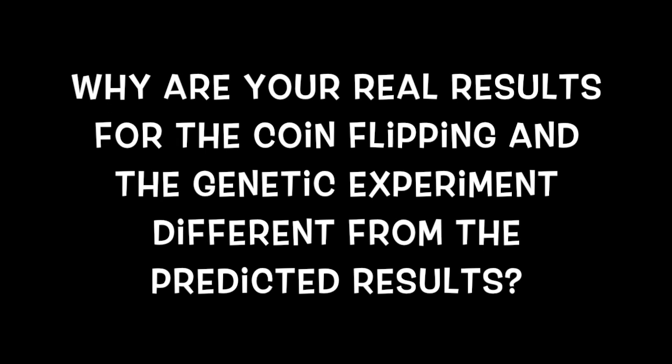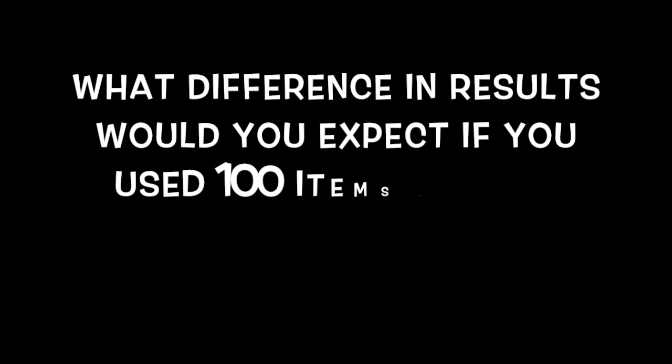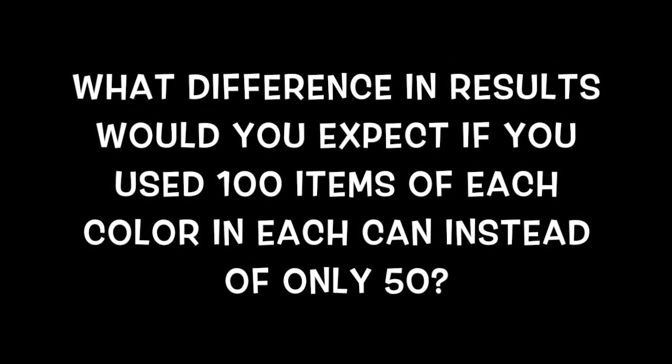We could see that the results we got were not exactly the same as the predicted ones. This happened because probability will never tell you a 100% true answer — it just gives you a range and an approximation to the real result. The probability will not change.